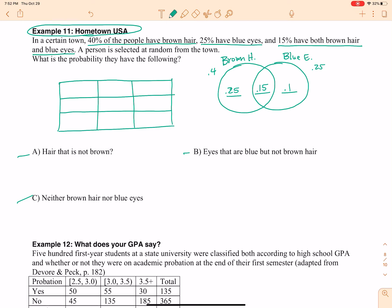All right, so I'm going to, at the top, write brown hair, not brown hair. And then I'm going to create a row called blue eyes and not blue eyes. So, I know that 40% of the people have brown hair. So, that's going to be this total column. All of these people.